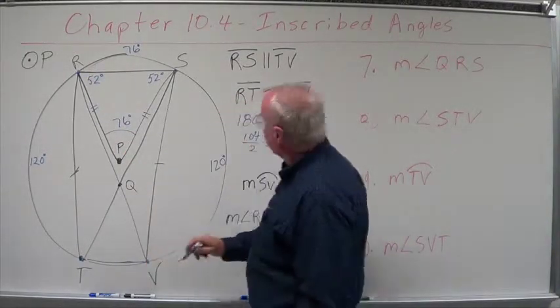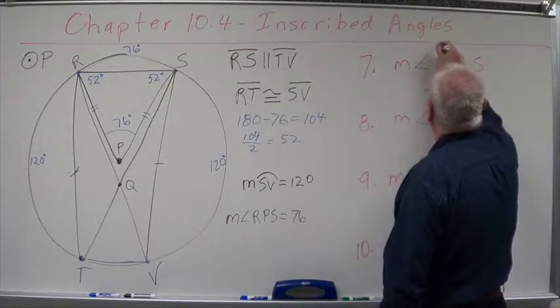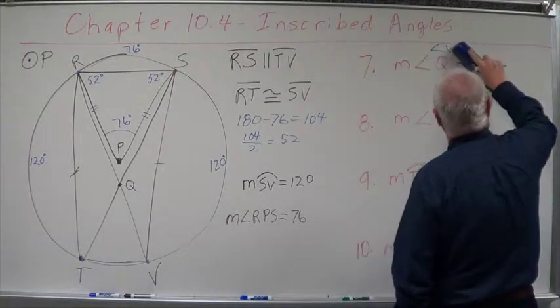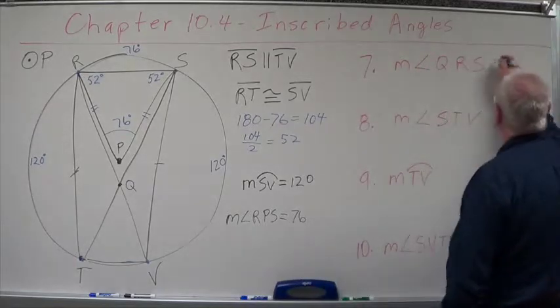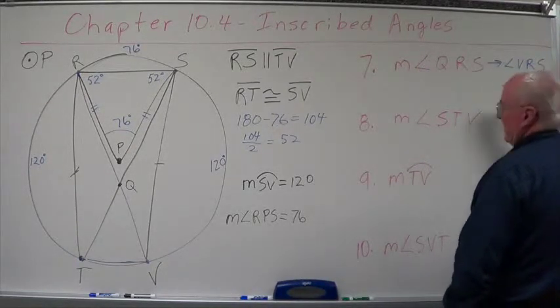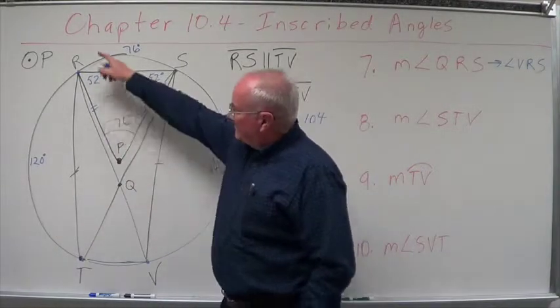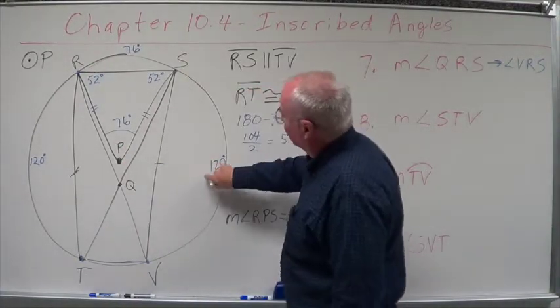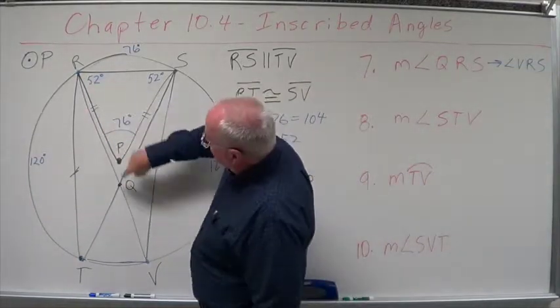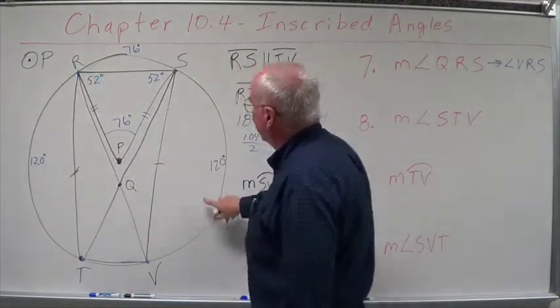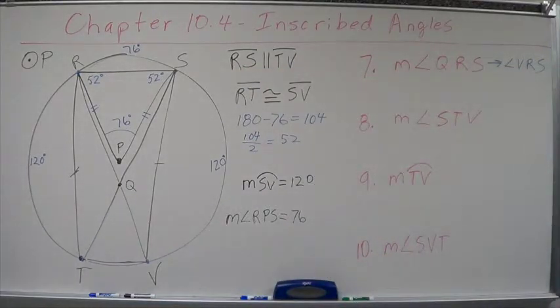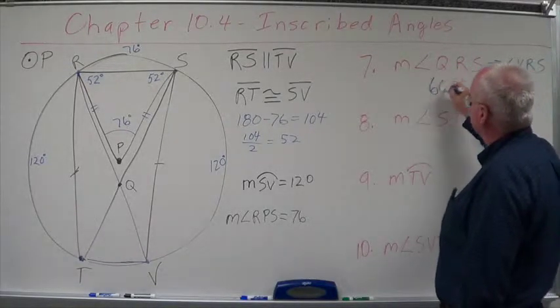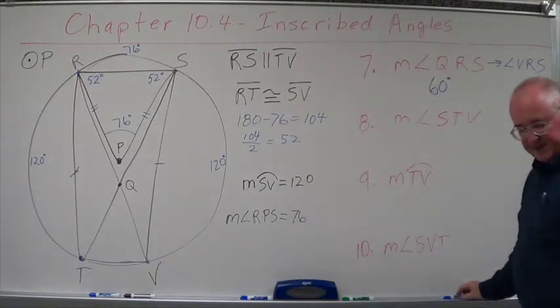That really is the same thing as angle VRS. Let's put that over here so we can see it. That's the same as angle VRS. Why? Because V, R, Q are on the same line. So let's do VRS. Well, VRS creates this arc of 120 degrees. VRS is an inscribed angle that creates an arc of 120. Therefore, this angle has to be 60 degrees. Trying to scam us on that one, so be careful.